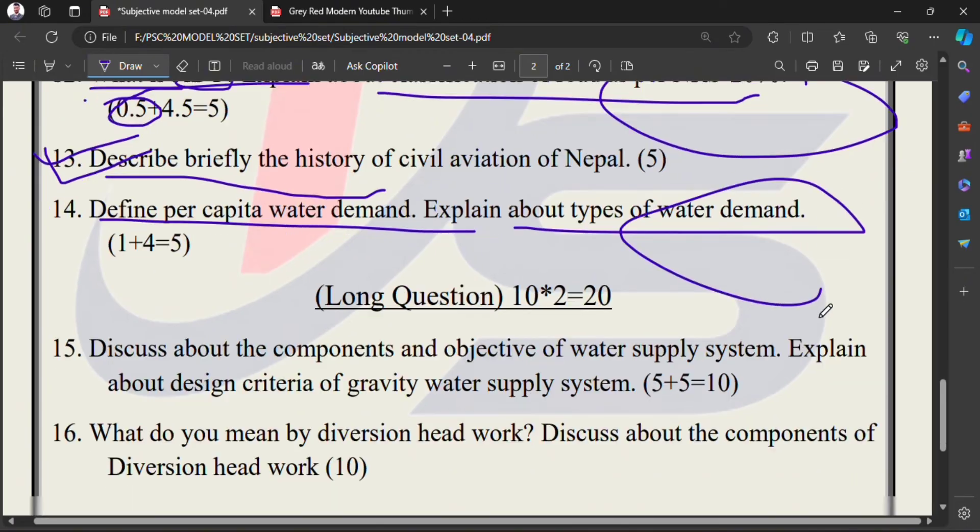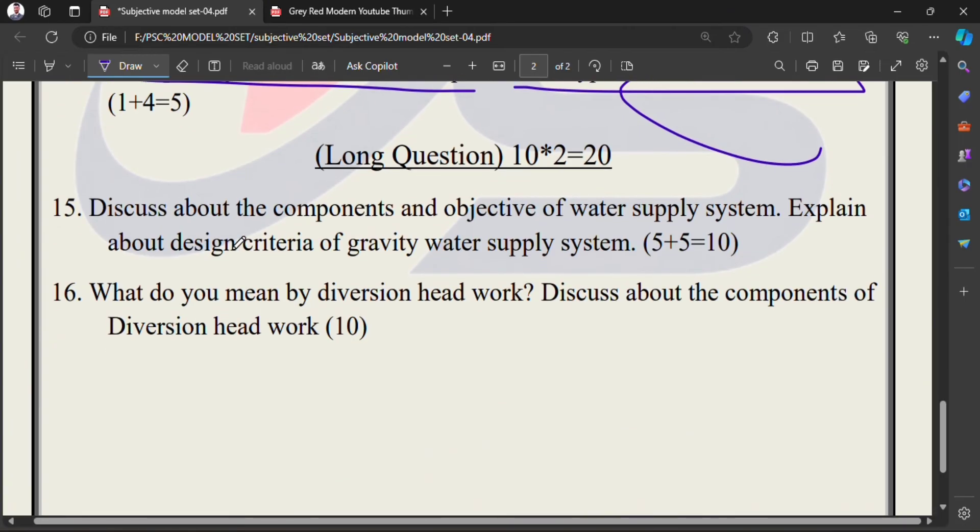Long question: Discuss about the component and objective of water supply system. Water supply. Explain about design criteria of gravity water supply system - this is confirmed, 16th number question.